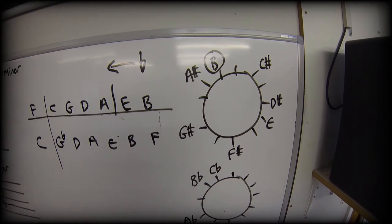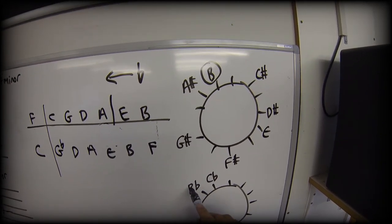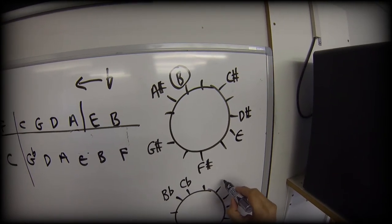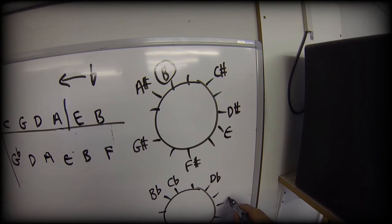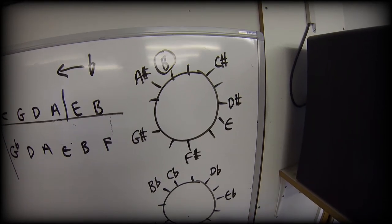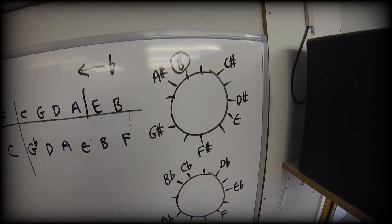So G flat, two to an A flat, two to a B flat, one to a C flat. We're going to have two to a D flat, going to have two to an E flat, going to have two to an F, and then one to a G flat.